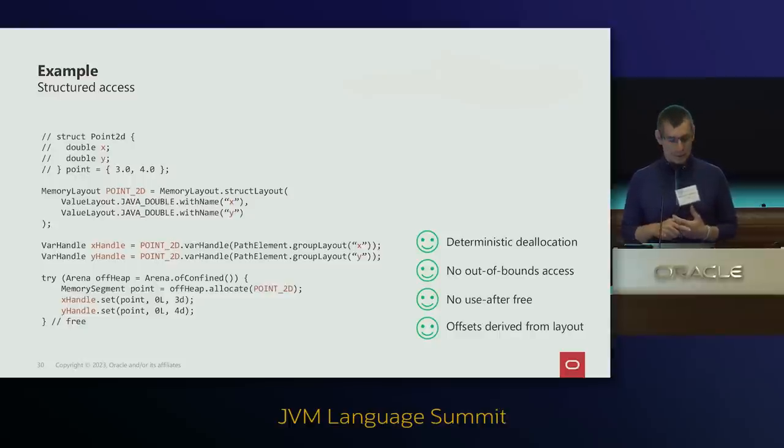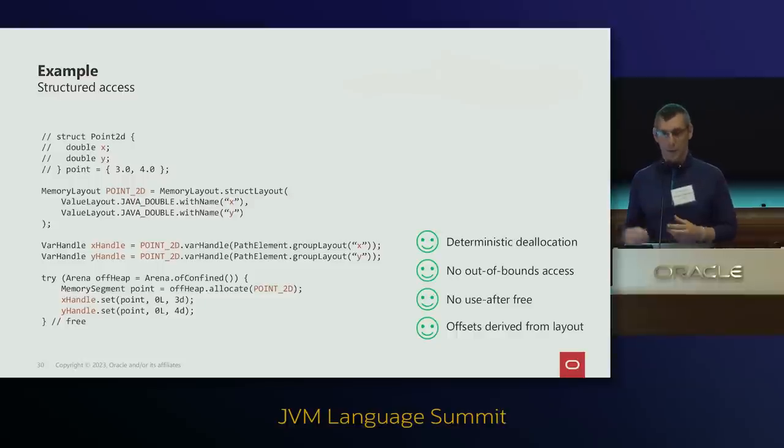Finally, we have deterministic deallocation, spatial safety, temporal safety, and no manually computed offsets. This is much better than using the ByteBuffer API for interacting with off-heap memory.